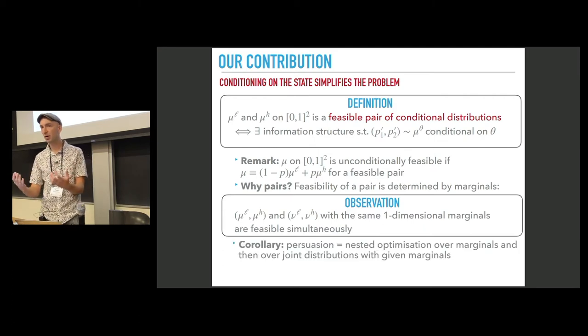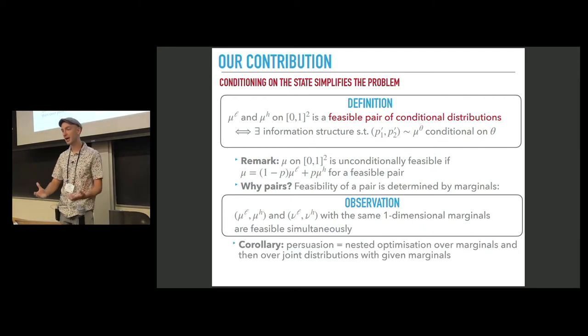And as a result, we can now think of a multi-receiver persuasion as a nested optimization. First, given the marginals, we maximize over all possible pairs with these marginals. And then we have external maximization over marginals that correspond to feasible pairs.